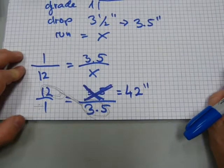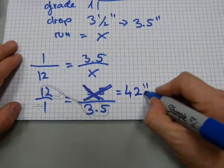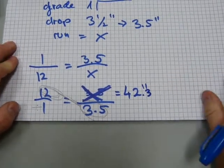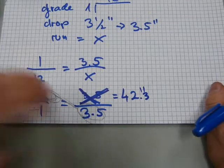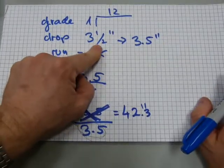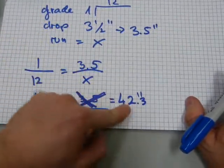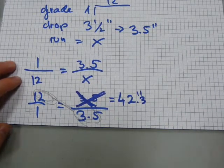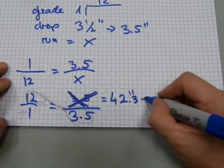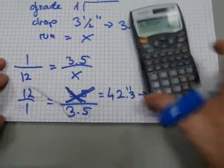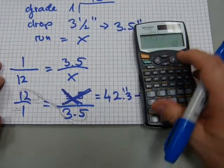Now, sometimes you get a decimal number. So let's pretend we got 42.3 inches. Because if we had a different run or a different grade, eventually sometimes you get like 42.3 inches. What do you do with 42.3 inches? You need to make a fraction out of it, and a fraction and feet and everything.